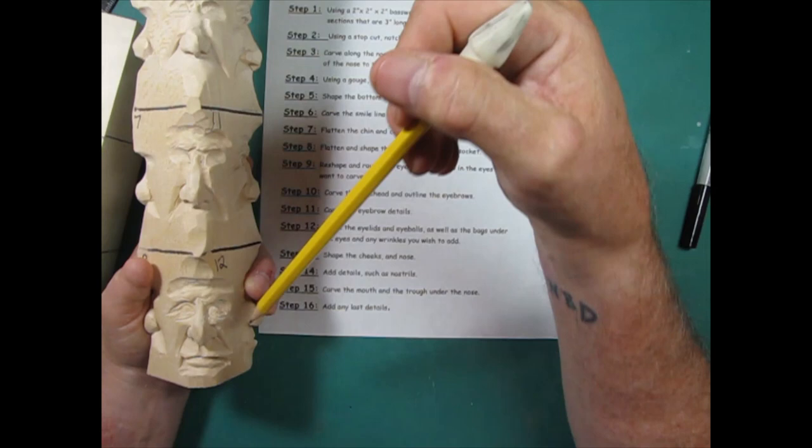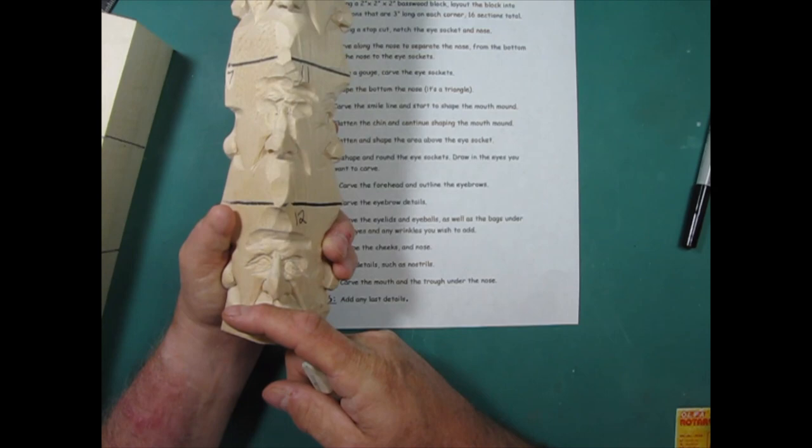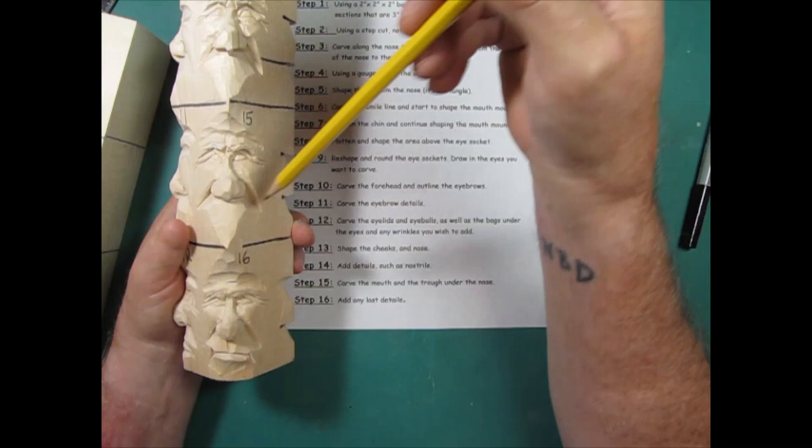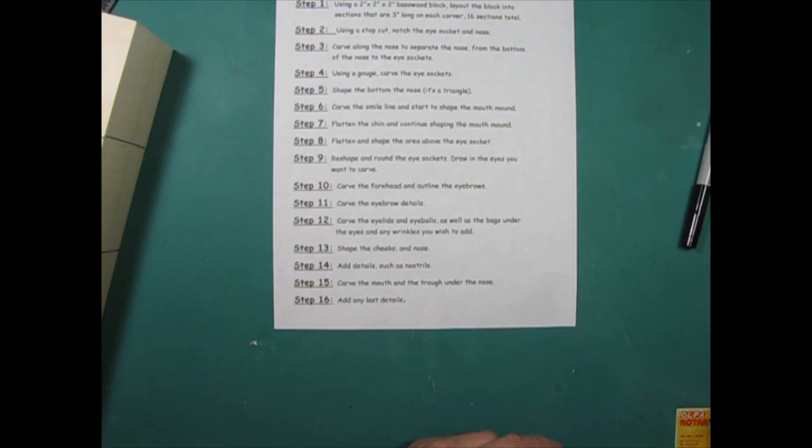Number eleven, we'll carve the eyebrow details. Number twelve, we'll carve the eyelids, eyeball, as well as the bag under the eyes and any wrinkles you wish to add. Ignore the mouth, that's actually out of sequence, I was confused. Thirteen, we'll shape the cheeks and the nose. Fourteen, we'll add nostrils. Fifteen, we'll carve the mouth. And then we'll add any last details.